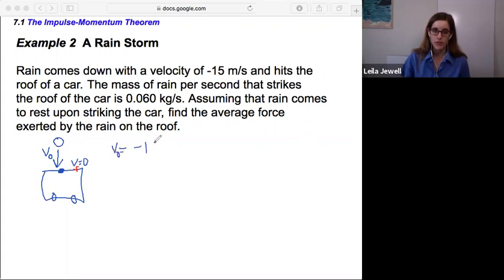V zero is negative 15 meters per second. So that's a great thing to write down is what we know. They also give us this 0.060 kilograms per second. So what do we think this corresponds to? It's kind of a mysterious quantity, but the units can give us a clue. It says kilograms per second. So what has units of kilograms?